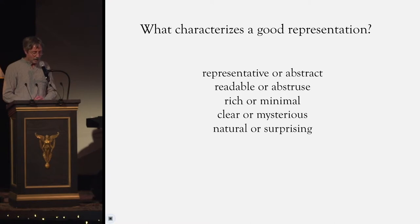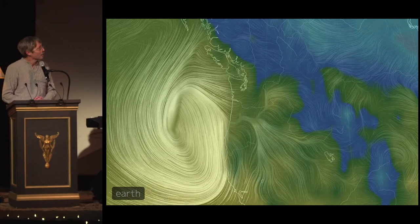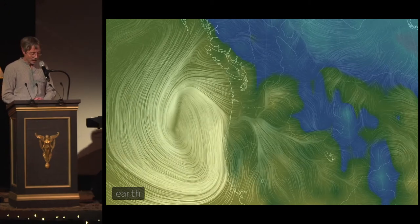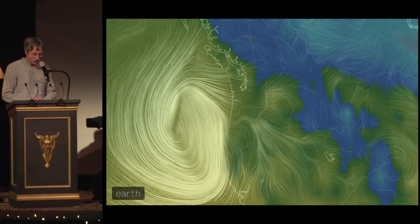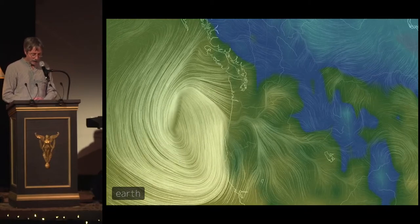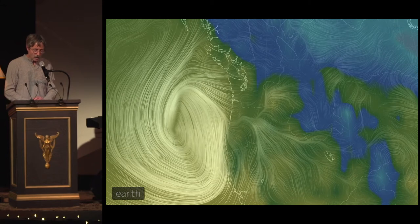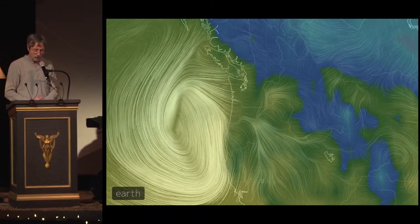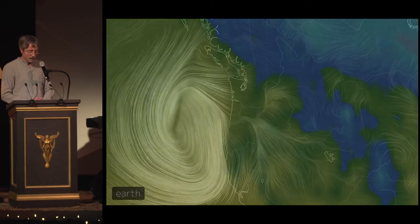Getting back to wind, a favorite visualization of mine is on the web called Earth Wind Map. This is showing wind in the western U.S. — Bozeman is actually a little bit to the right of center there. This was taken a few days ago. It's often open on my browser, and I find it to be representative and natural, readable and clear, and surprisingly beautiful.